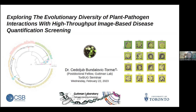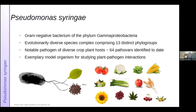I'm working as a postdoctoral fellow in the Gutman lab, where I've learned a lot about Pseudomonas syringae — my favorite model organism. It's a gram-negative bacterium, phylum Gammaproteobacteria. It's notable because it's comprised of an evolutionarily diverse species complex of 13 distinct phylogroups, and it's a pathogen of diverse crop plant hosts — over 64 pathogenic variants identified to date, including tobacco and coffee.